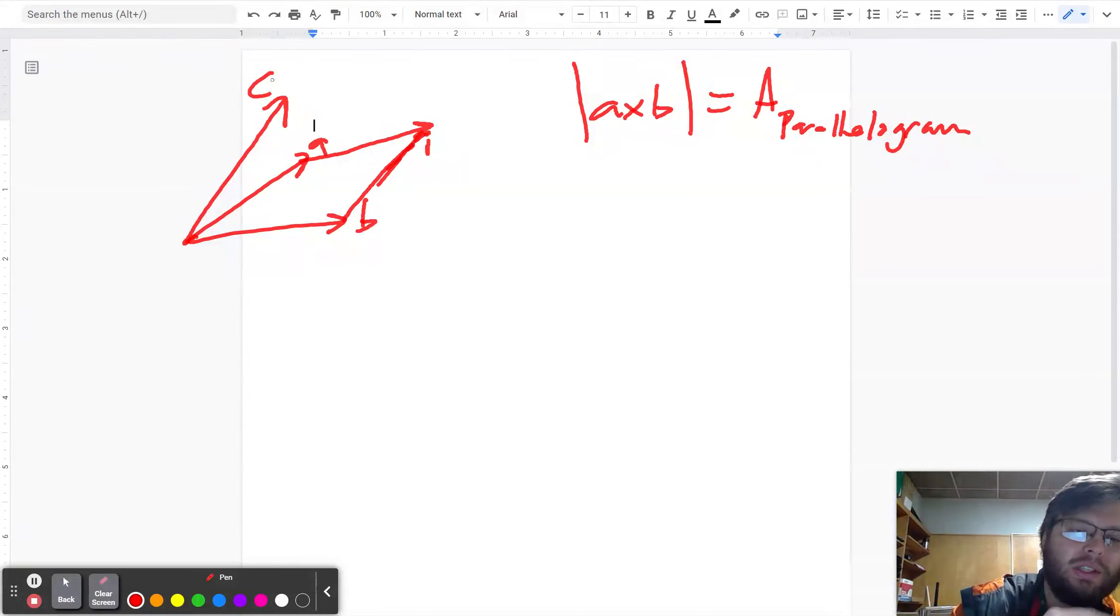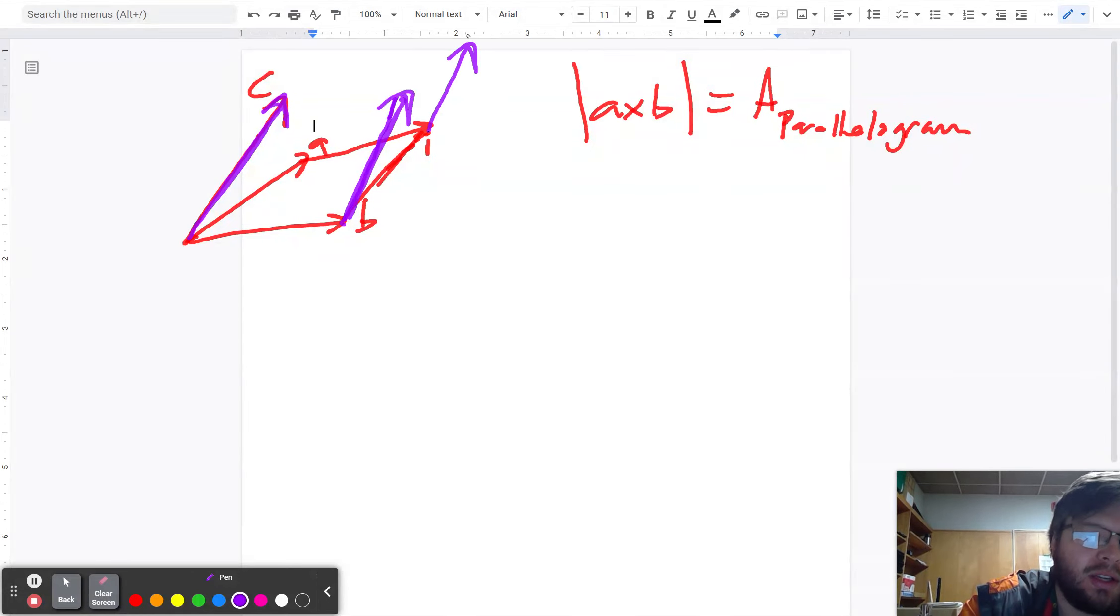So I'd like to apologize in advance for my drawing skills. But what I want you to try to imagine, maybe if I use different colors, we can make this a little bit more clear. So vector C can be purple.